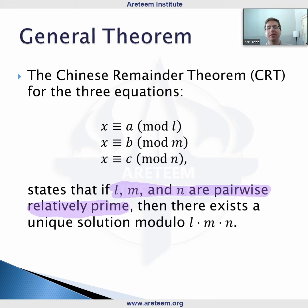The restriction is that however many mods you have, in this case three (l, m, and n), they are pairwise relatively prime. That means they share no common factors piece by piece. So l and m can't share any factors, m and n can't share any factors, l and n can't share any factors.